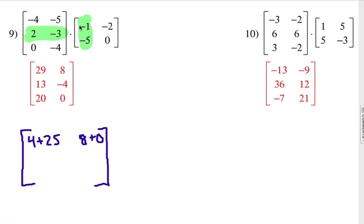Next one is 2 times negative 1, which is negative 2. 3 times negative 2, which is negative 2, and negative 3 times 0, which is 0. That would be negative 4 in that position right there.